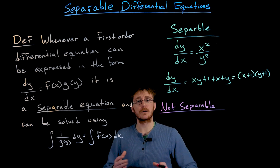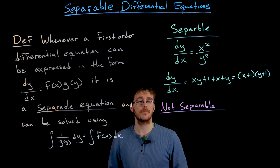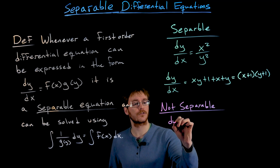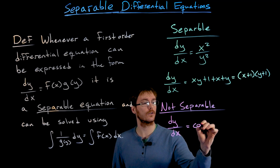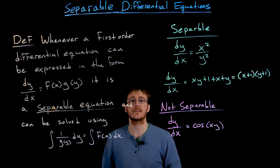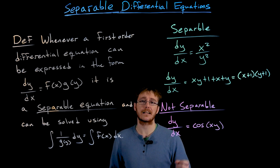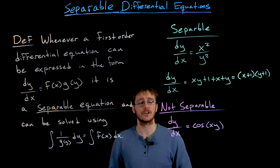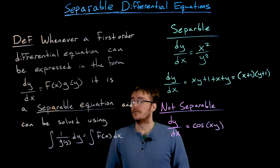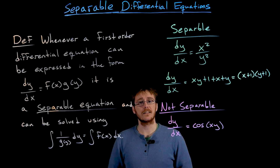Let's also point out some non-separable differential equations. If our first-order differential equation looked like dy/dx equals cosine of x times y, there's no way we could factor the right-hand side as a function of x times some other function of y and move these pieces around the way we need to. So this is not a separable differential equation, and our method of separation of variables will not work here. We'd have to resort to some other method.